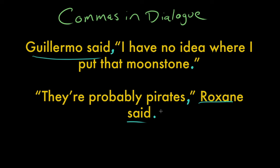In the event that this were a question, however, you would use a question mark. Or if it were an exclamation, you would use an exclamation point. But if it were going to just be a period, you wouldn't do this — you wouldn't say "They're probably pirates, period, Roxanne said." You would say "They're probably pirates, comma, Roxanne said."